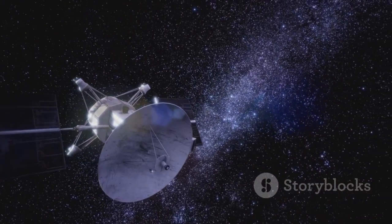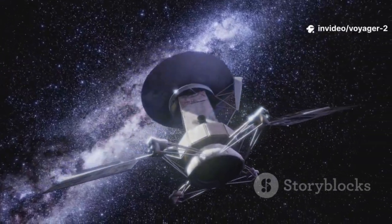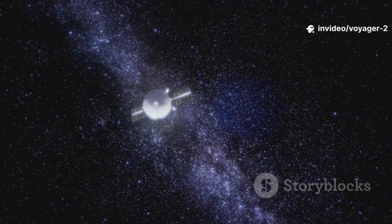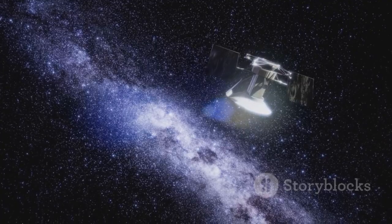For the first time, humanity had sent two emissaries into the space between the stars. Voyager 2's data is a gift, a first-hand report from a place we had only imagined. Its journey marks both an ending and a beginning. The solar system was behind it, the galaxy lay ahead.